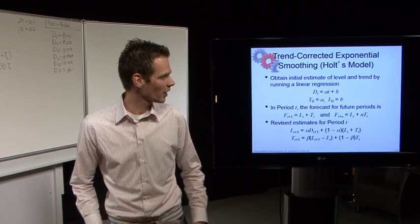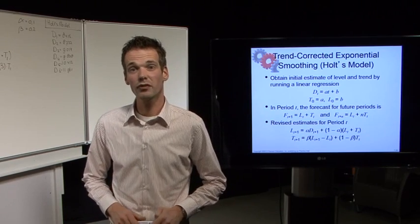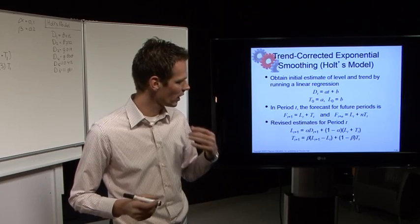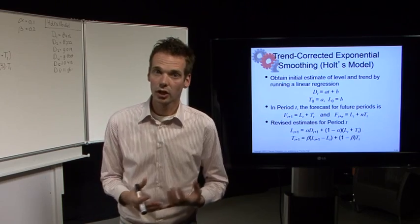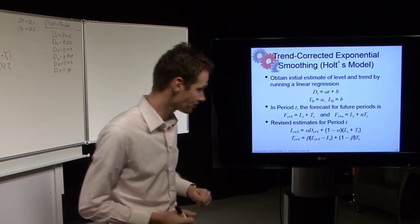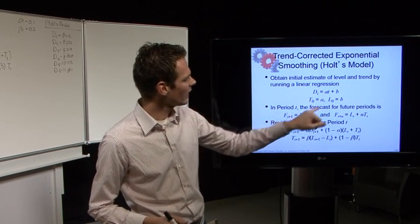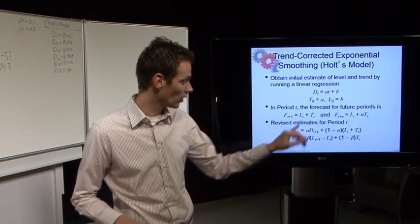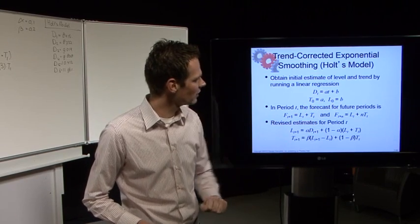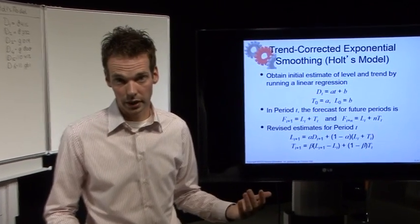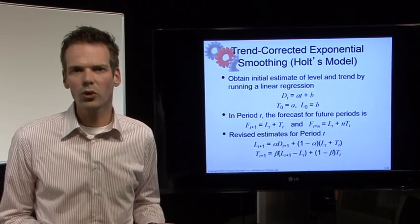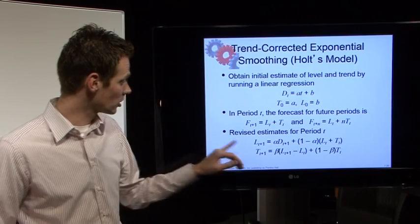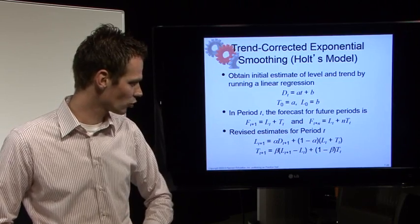For the trend corrected exponential smoothing, we use several formulas that come into play in different stages. First, we have to come up with a level and a trend for period 0. We do this through regression analysis, where dt equals alpha times t plus beta. The trend for period 0 is alpha, and the level for period 0 is beta. The forecast for the next period is the level for this period plus the trend for this period.